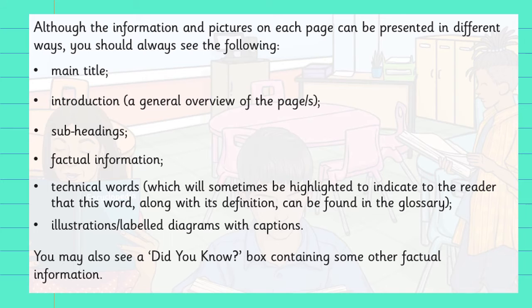Although the information and pictures on each page of an encyclopaedia can be presented in different ways, you should always see the following: a main title, an introduction, subheadings, factual information, and technical words — which, as we've just seen, are sometimes highlighted to indicate that the definition can be found somewhere else within the encyclopaedia. There will probably also be illustrations and labelled diagrams with captions. Sometimes you might also see a 'did you know' box containing fun facts or other kinds of information.